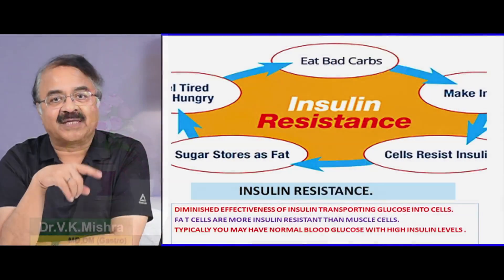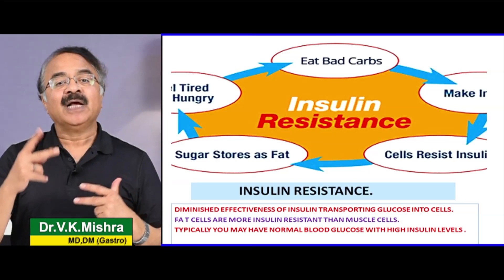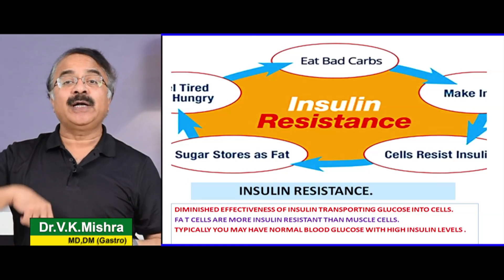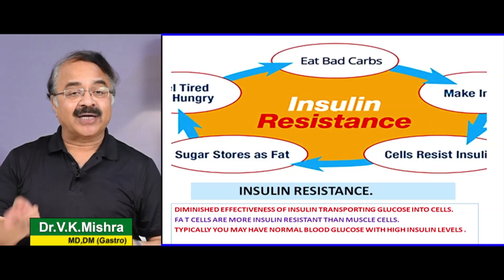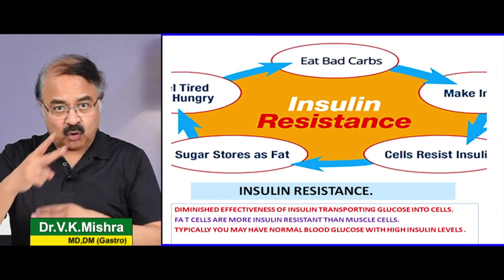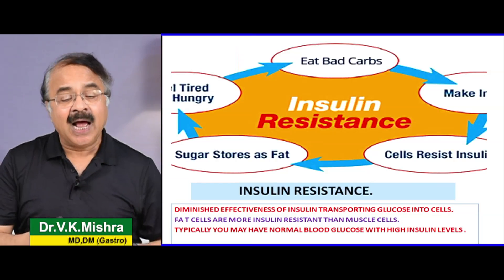जहां तक obesity के सवाल है, इसके center में हमेशा insulin resistance है। यह basically insulin resistance है जो सभी समस्याओं की जड़ है। Insulin important है — जो हमारे blood vessels में या खून में glucose होता है उसको transport करके cells के अंदर ले जाता है। अगर यह transport ठीक से नहीं होता, resistance होता है, तो glucose हमारी cells में नहीं जा पाता। Insulin का level बढ़ता है, और अगर blood glucose normal हो लेकिन insulin का level उपर हो, तो मान लीजिए कि insulin resistance है। Insulin resistance हमारी fat cells को grow कराता है, हमें obese बनाता है।